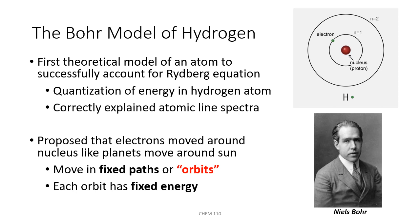The very first theoretical model of the hydrogen atom that successfully accounted for the Rydberg equation was proposed by physicist Niels Bohr. The Bohr model proposed that electrons lived in orbits that circled the nucleus, with each orbit having its own fixed energy, and the electron could jump from one orbit to a higher orbit. This is analogous to how planets move around the sun in fixed orbits.